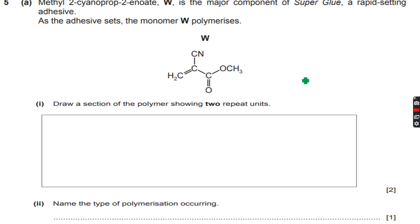The monomer W polymerizes, so they are saying draw a section of the polymer showing two repeat units. Let's see what type of polymerization can take place over here. Now there is already an ester group, but can it form ester bonds with others?